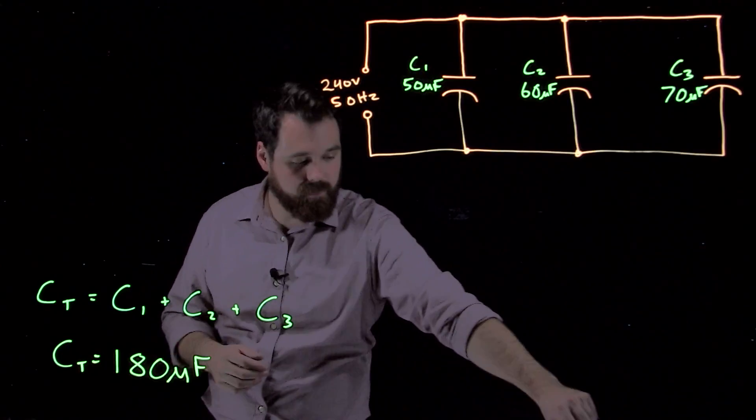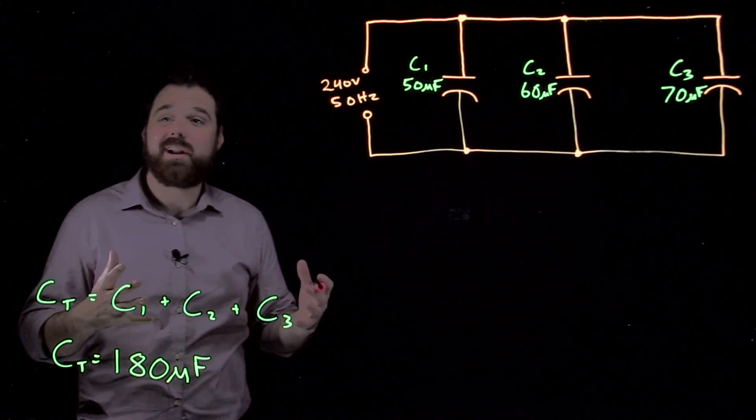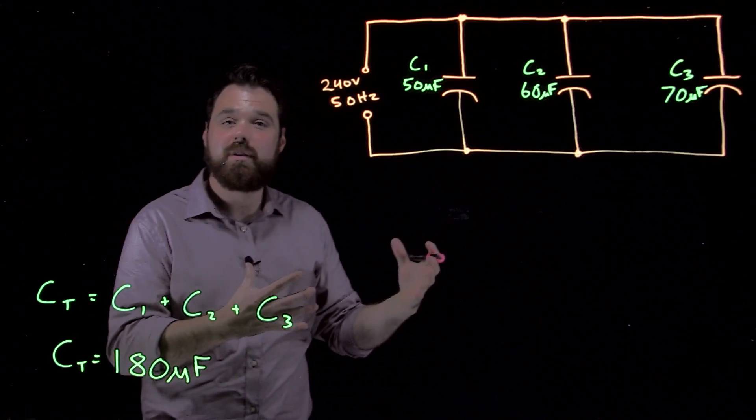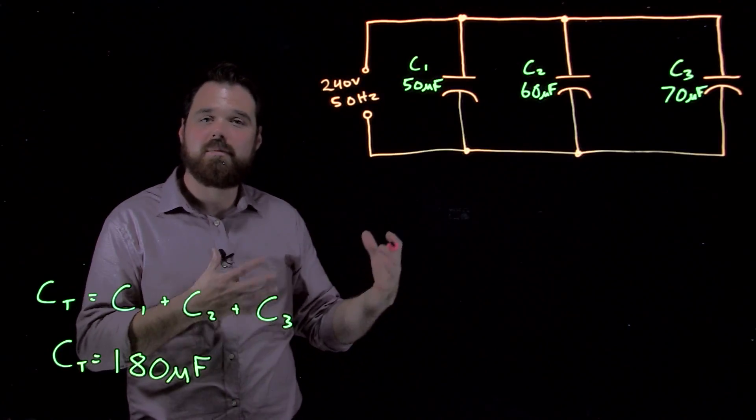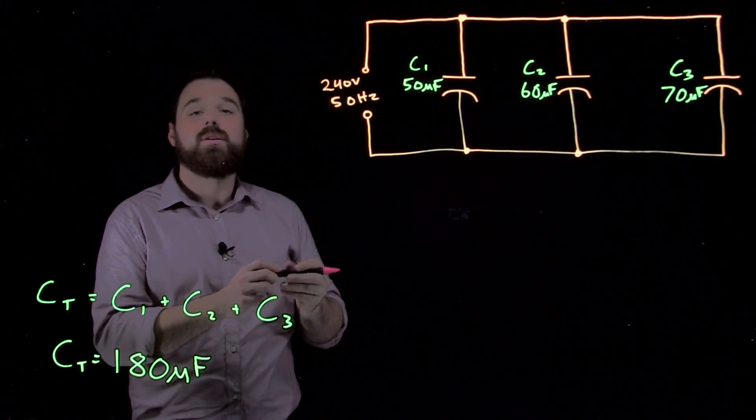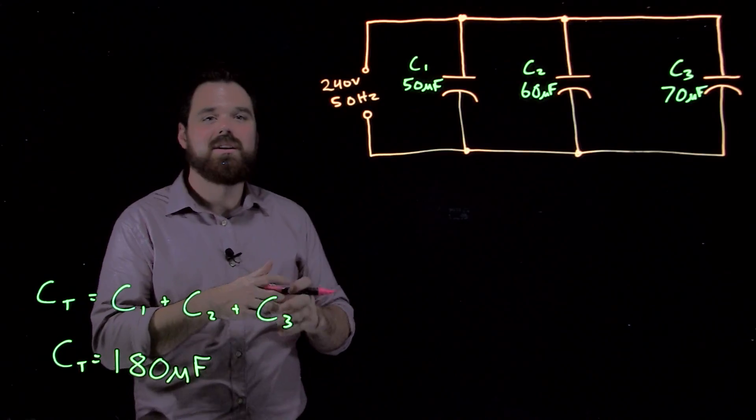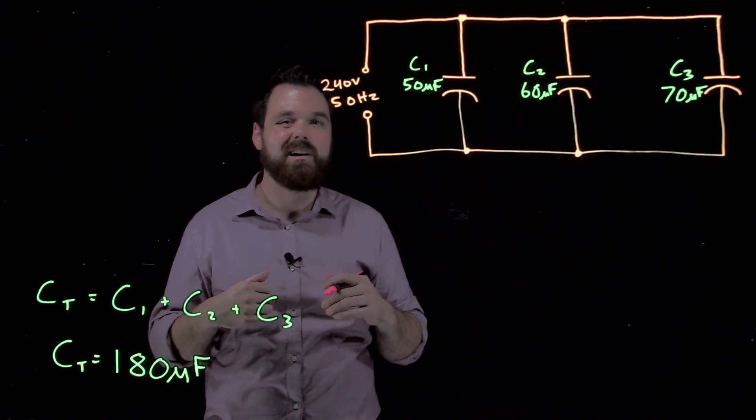Because we are talking capacitive reactance, we're going to have a capacitive reactance in each one of these branches. Each one of these branches is going to have their very own opposition to current flow. Of course, like everything else, we have a formula and we use this formula a lot.